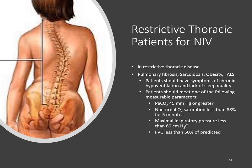For restricted thoracic disease, especially patients needing NIV at night — those with pulmonary fibrosis, sarcoidosis, obesity, or ALS — they have chronic hypoventilation and lack sleep quality. This is a strong indication to use NIV. Parameters to look for: PCO2 greater than 45, nocturnal O2 saturations less than 88% for more than five minutes, MIP less than 60, or forced vital capacity less than 50% of predicted. Many of these patients benefit from nocturnal NIV, especially those with restrictive disorders. This is a clear indication for NIV and has been proven effective in numerous studies.